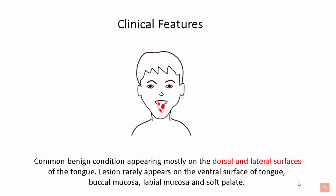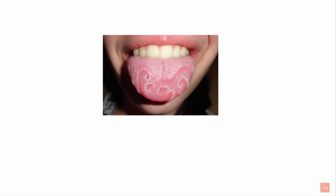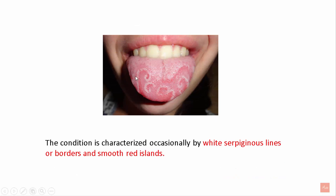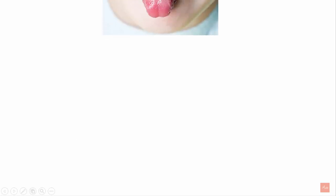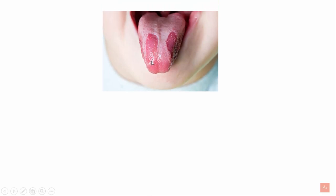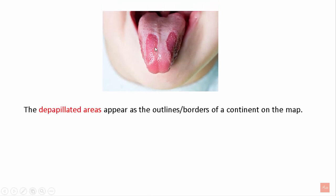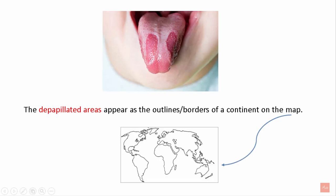The clinical features: it is a common benign condition appearing mostly on the dorsal and lateral surfaces of the tongue. Lesions rarely appear on the ventral surface of the tongue, buccal mucosa, labial mucosa, and the soft palate. The condition is characterized by white serpiginous borders and smooth red islands. The desquamated areas appear as the outline or borders of a continent on a map.